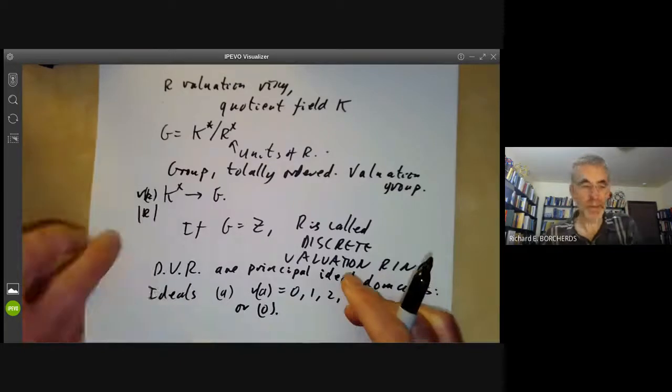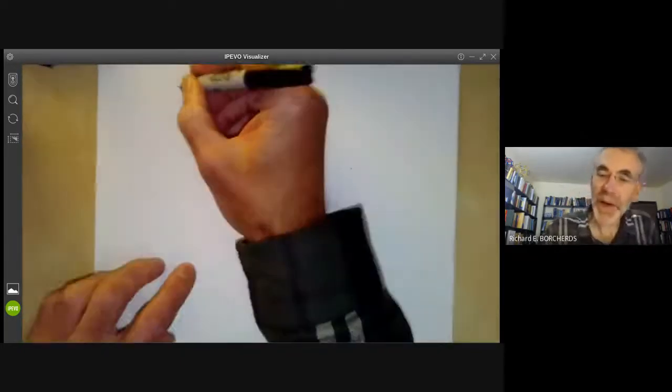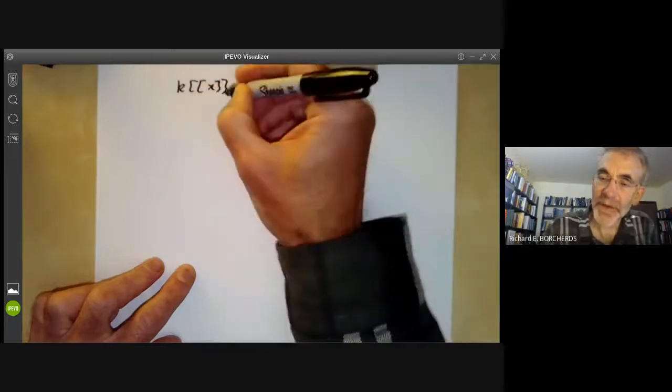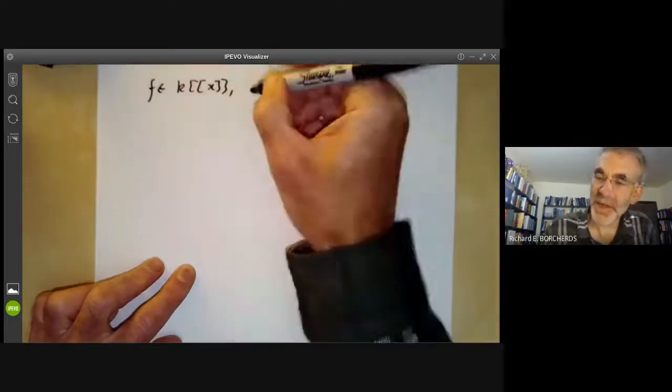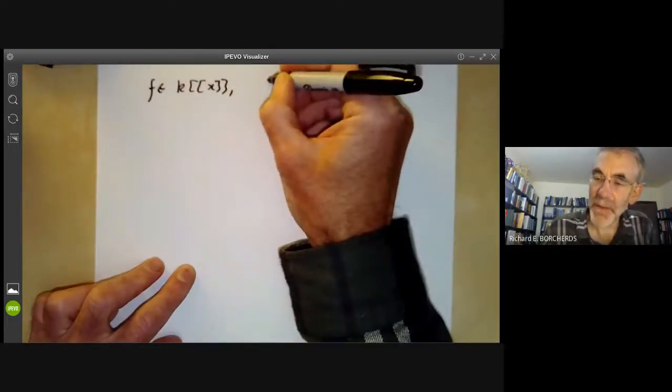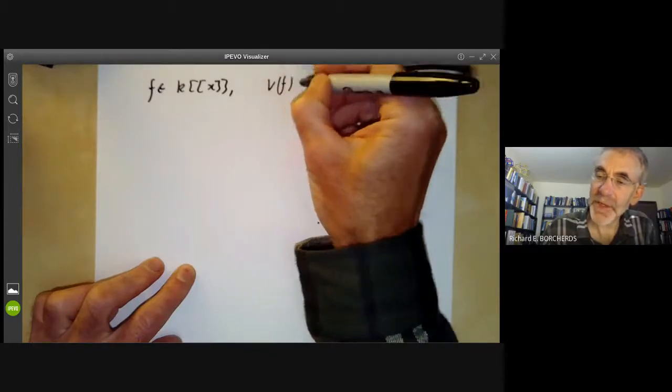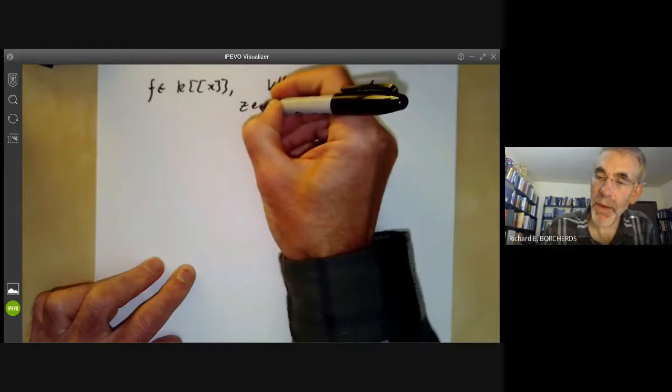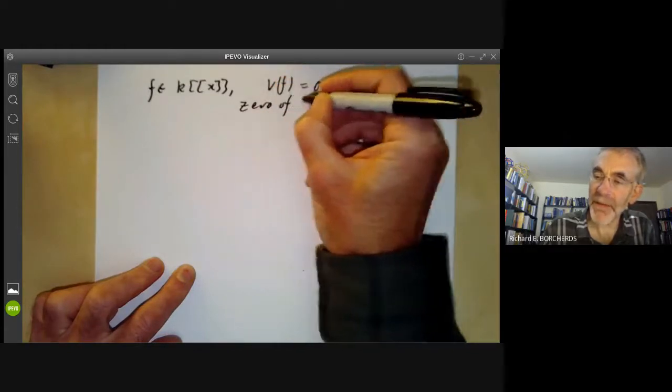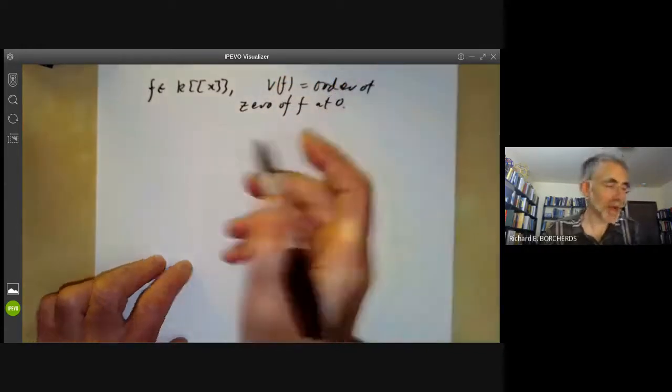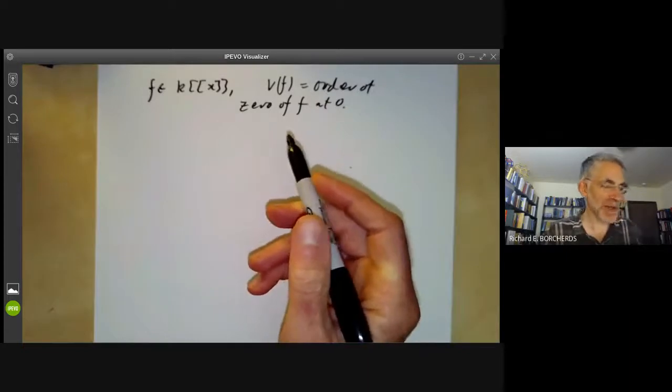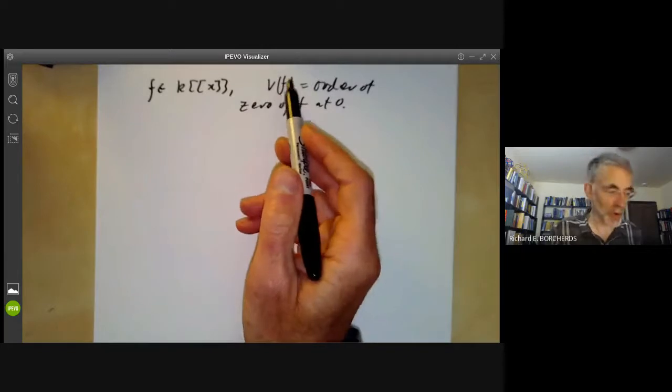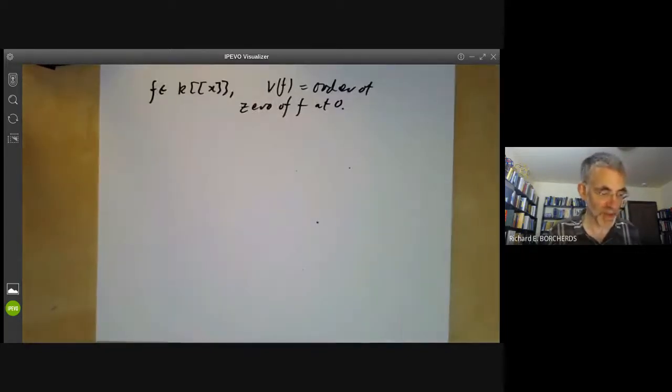So in the ring K of X, if F is the power series, then the valuation V of F is just the order at 0 of F at the point 0. And in general, discrete valuation rings are sort of similar to this. The valuation is often the order of the zero of something somewhere.